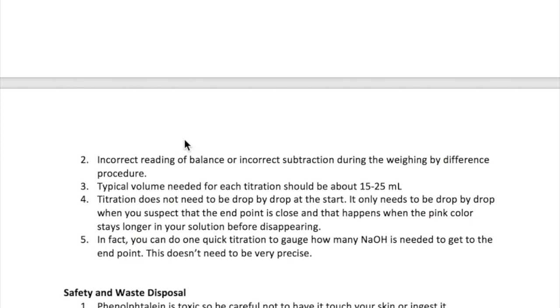Often the weighing by difference procedure causes students to misread the balance or miscalculate the mass they need to weigh. For example, you need to weigh 0.4 grams of acid. Your original mass of vial plus cap is 33.224 grams. You should tap out the solid until your mass of vial plus cap is about 32.824 grams.